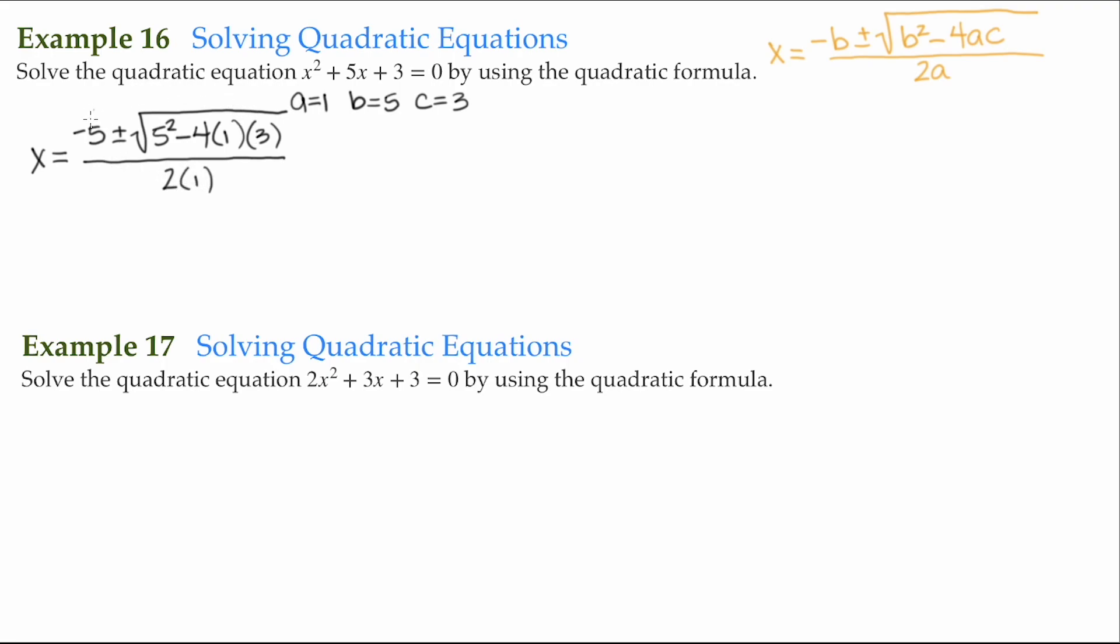Now we can go ahead and do the arithmetic here. This is going to be equal to negative 5 plus or minus the square root of 5 squared, that's 25. Negative 4 times 1 is negative 4, and negative 4 times 3, that's negative 12, all over 2 times 1, which is 2. This is then negative 5 plus or minus the square root of 25 minus 12, which is 13, over 2.